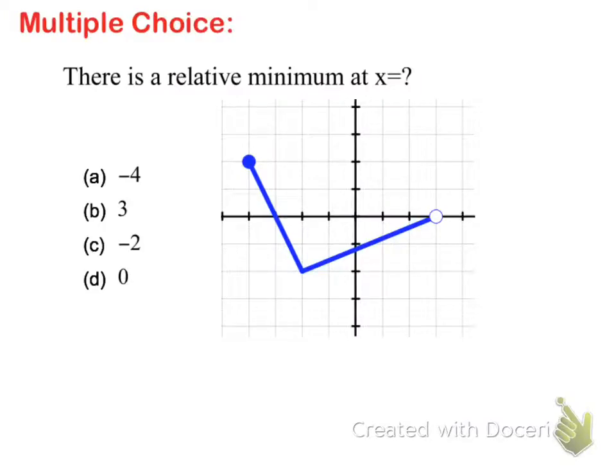Here's a multiple choice question for your Google form: there is a relative minimum at what x value?